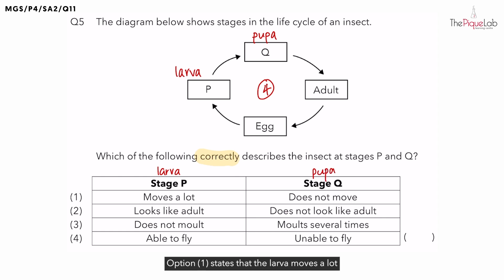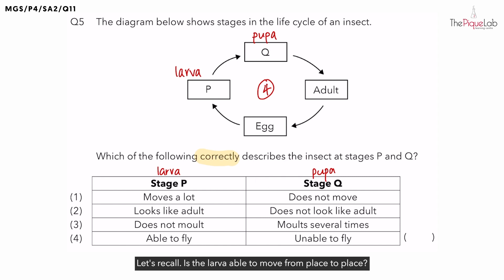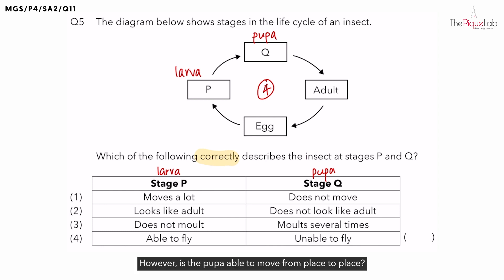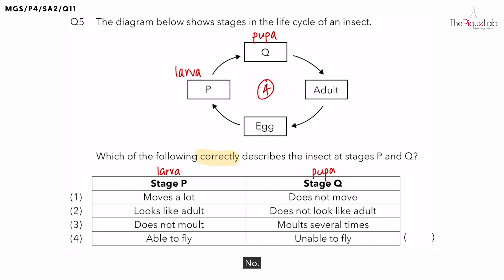Option 1 states that the larva moves a lot and the pupa does not move. Is the larva able to move from place to place? Yes. However, is the pupa able to move from place to place? No. Hence, is option 1 correct? Yes, option 1 is correct.